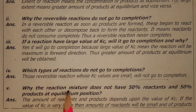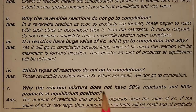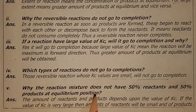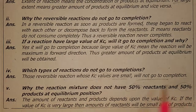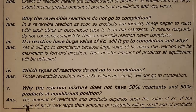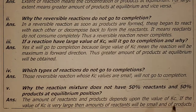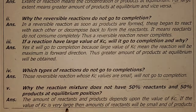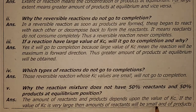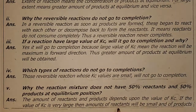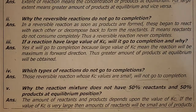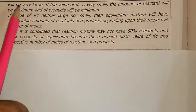Why does the reaction mixture not have 50% reactants and 50% products at equilibrium position? The amount of reactants and products depends upon the value of Kc. If the value of Kc is very large, then the amount of reactants will be small and the amount of products will be very large.